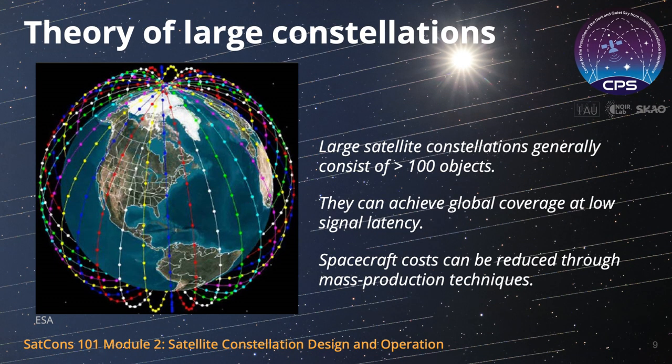Large satellite constellations involve both unique capabilities and challenges. Those proposed or launched to date provide telecommunication services, with goals to enable global communications at high speed. This in turn imposes certain requirements on their design and operation. The highest signal speeds mean satellites must fly at low altitudes of only a few hundred kilometers. But since the area of signal coverage on the ground depends on the height of the spacecraft, more satellites are needed to get the job done. The result is that many satellites must be visible over a given location at one time to effectively move data.